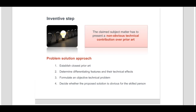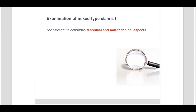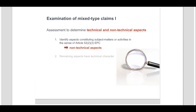To carry out an objective and consistent examination of a mixed-type claim, an assessment is required to determine the technical aspects and non-technical aspects of the claimed features. This commences with the identification of those aspects which, when considered in isolation, constitute subject matter or activities in the sense of Article 52, Paragraphs 2 and 3. These identified aspects may be termed the non-technical aspects of the subject matter, while the remaining aspects have technical character per se and may be termed the clearly technical aspects.